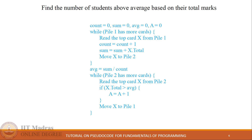Now we will see an example of pseudocode consisting of multiple non-nested iterations. Consider this problem statement: find the number of students above average based on their total marks. First we compute the average total marks, which requires one iteration. Then the computed result is compared against each card in the pile, which requires another iteration. Multiple non-nested iterations are required when the computation of the second iteration is dependent on the result of the first.